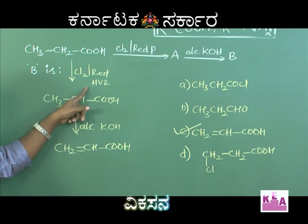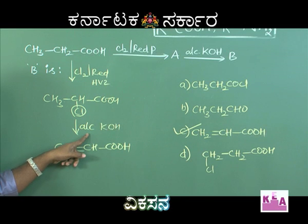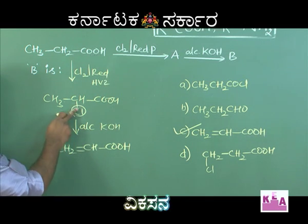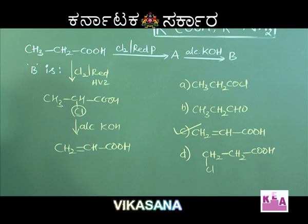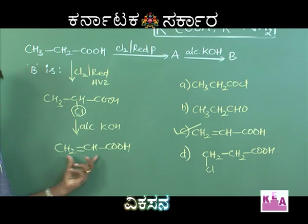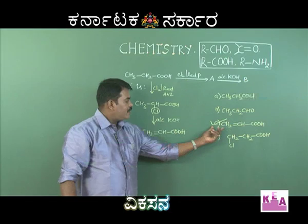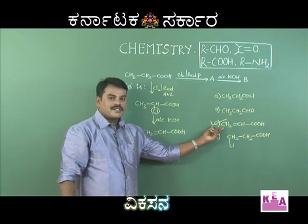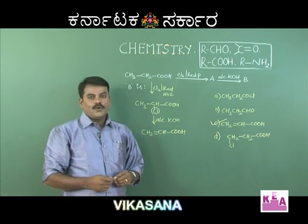So, first the HVZ reaction occurs, then dehydrohalogenation — removal of hydrogen followed by halogen — giving an alpha-beta unsaturated carboxylic acid, which is option C: CH₂=CH-COOH.